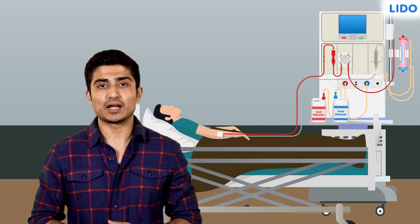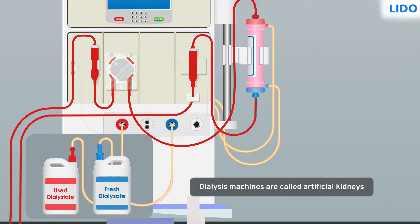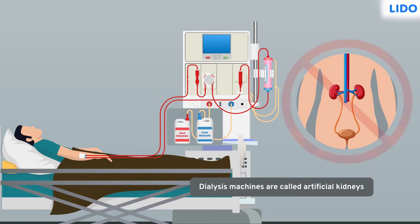In dialysis, the blood is cleaned using a liquid called dialysate or bath. A dialysis machine acts like an artificial kidney to filter out the waste from a person's body whose kidneys have stopped functioning normally.